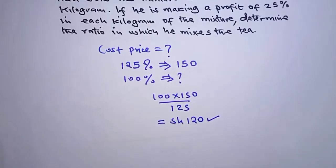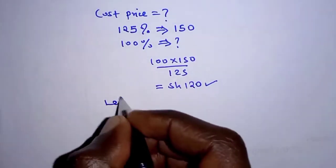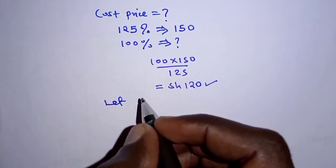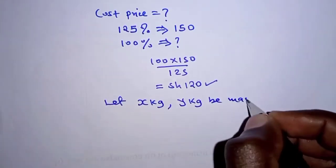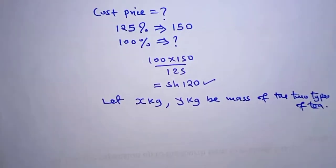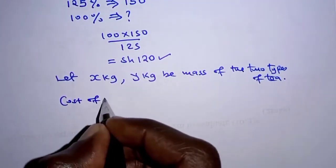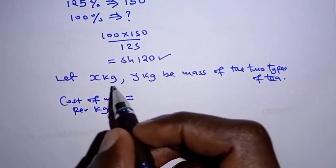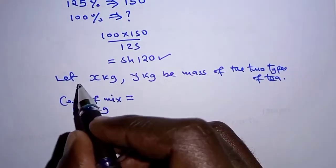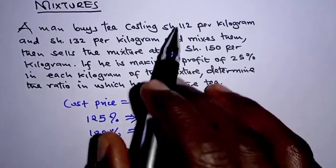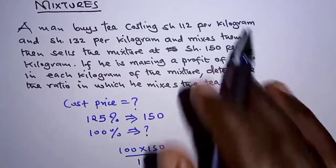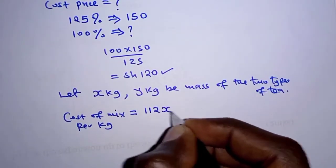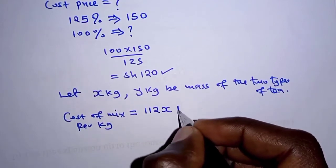We will use this cost price in the following formula. First, we let the mass of the two types of tea be x and y respectively. The cost of the mixture per kilogram is calculated as the total cost of both types. For the first type, the cost is 112 shillings per kilogram and there are x kilograms, giving 112x.